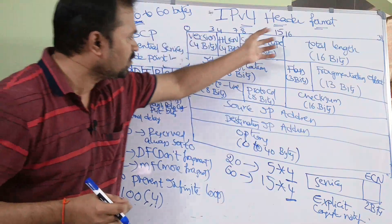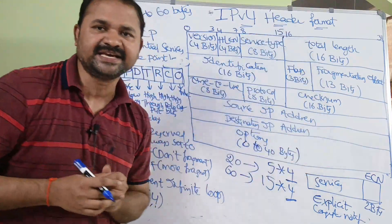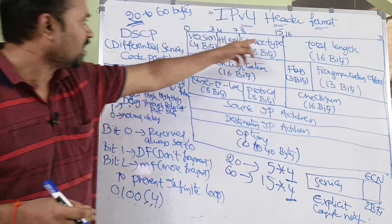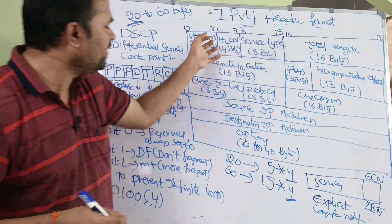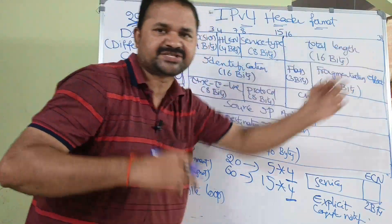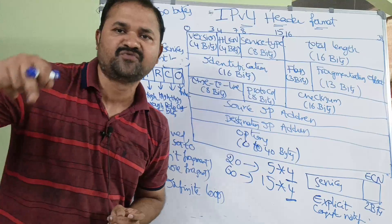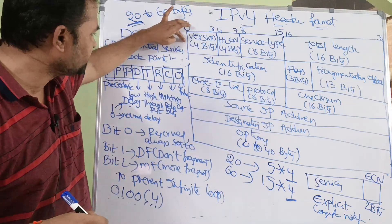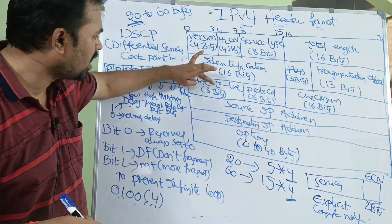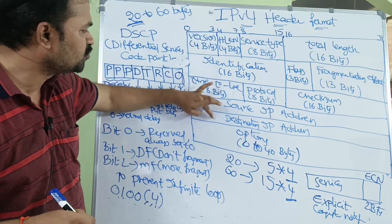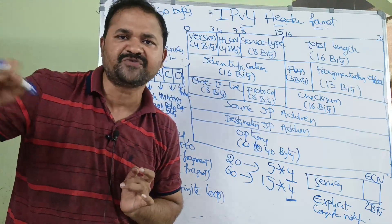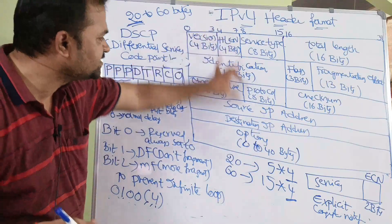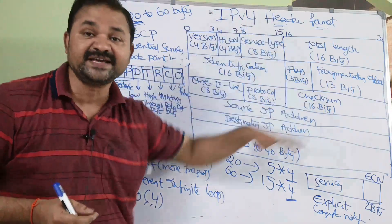Now let us see what is the size here. If you see here, all these are the fields. These are 2 bytes, and we have 2 bytes. So 2 plus 2 means 4 bytes. We have a first row, second row, third row, fourth row, fifth row. So 4 into 5 means 20 bytes. So the size of the IP header is 20 bytes.